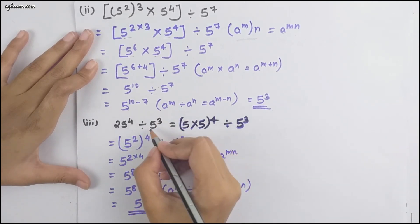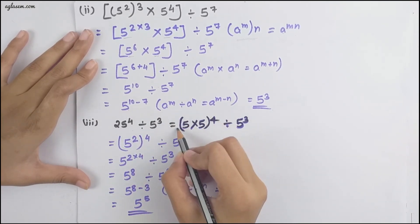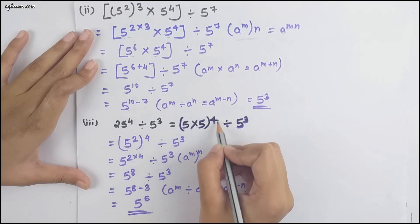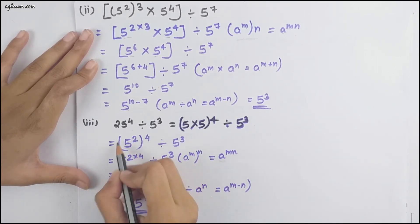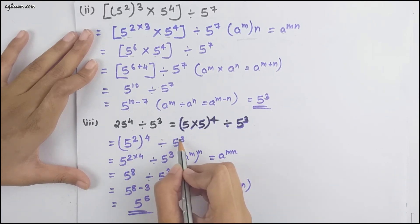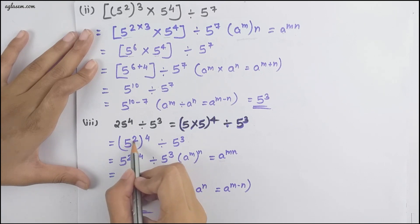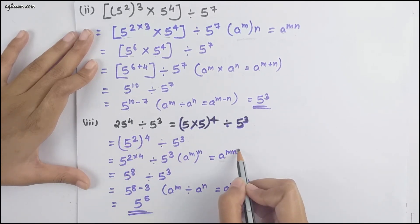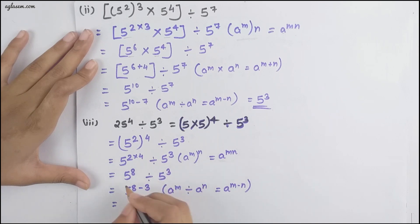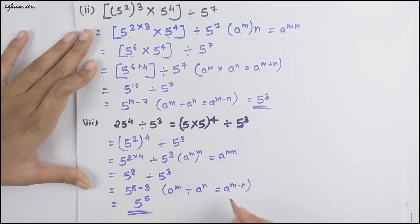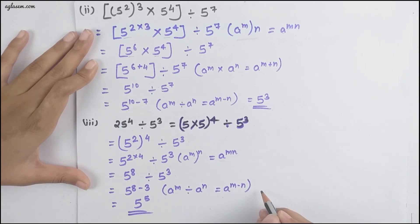Moving to the third part: 25⁴ ÷ 5³. We write 25 as 5², so we have (5²)⁴ ÷ 5³. Using (a^m)^n = a^(m×n), we get 5^(2×4) = 5⁸ divided by 5³. Then using a^m ÷ a^n = a^(m−n), we get 5^(8−3) = 5 raised to the power 5 as our answer.